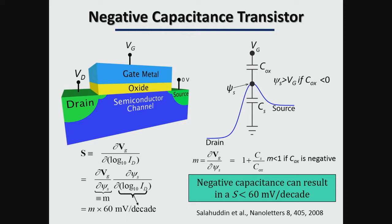Mathematically, the subthreshold swing is a product of two factors: 60 millivolts per decade, which comes from the Boltzmann distribution, multiplied by the body factor M, which is the ratio of the applied gate voltage to the interface potential. In a conventional transistor where both semiconductor capacitance and oxide capacitance are positive, M is larger than 1. In a negative capacitance transistor, since the oxide is negative, M can become smaller than 1, so the subthreshold swing can go below 60 millivolts per decade, reducing power voltage in CMOS and power dissipation.